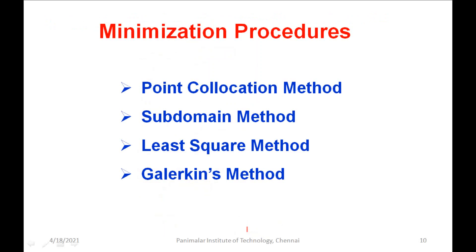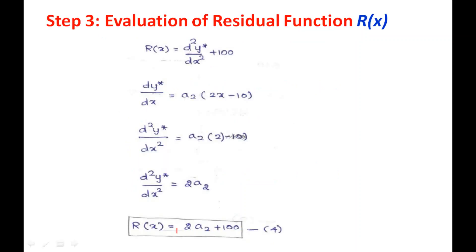The procedure summary: given a mathematical model, assume a trial function based on the order of the differential equation, apply boundary conditions to get the eligible trial function, substitute into the governing equation to get the residual function, then apply one of the four minimization procedures. There are four methods: Point Collocation, Subdomain, Least Square, and Galerkin's — the last being the basis for finite element method.